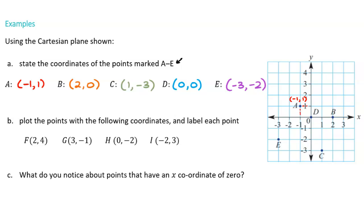Now we're asked to plot some points. Point F is (2, 4): two units in the x-direction and four units up. Point G is (3, negative 1): three units right and one unit down. Point H is (0, negative 2): no left or right movement, but two units down. Point I is (negative 2, positive 3): negative two in the x-direction and positive three in the y-direction.